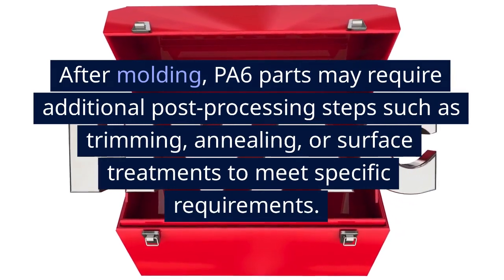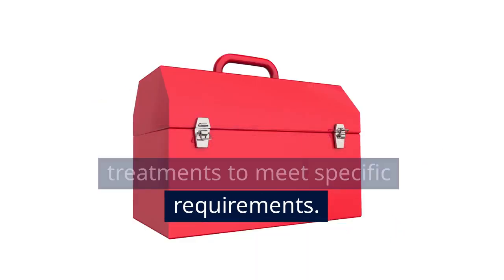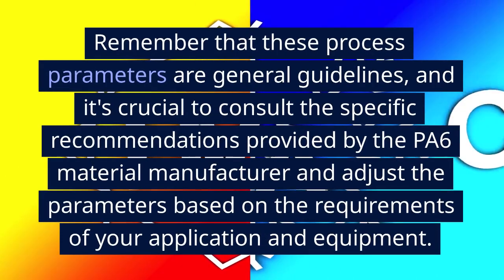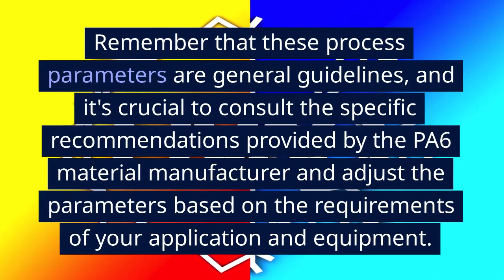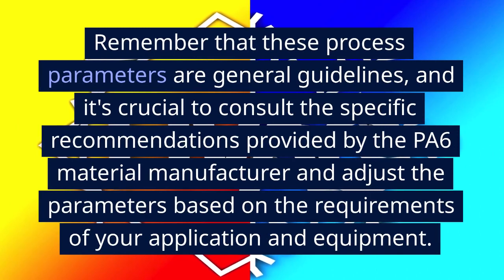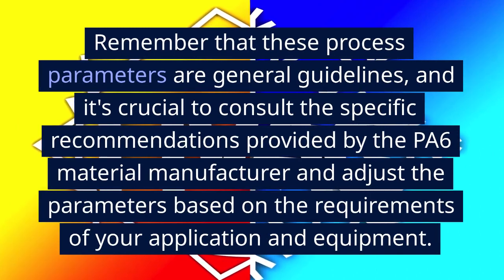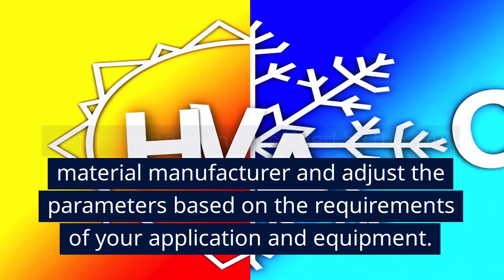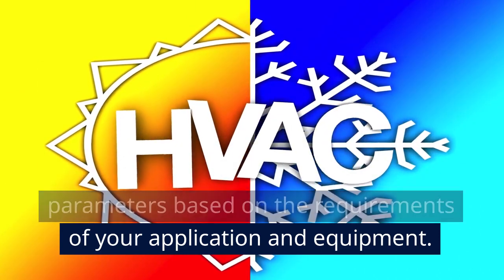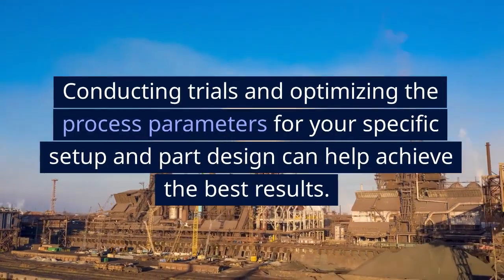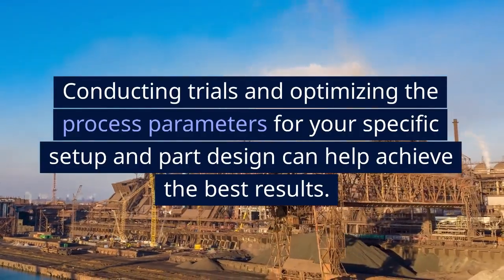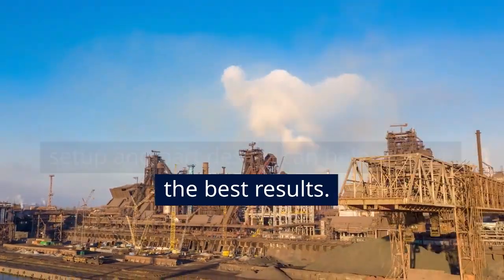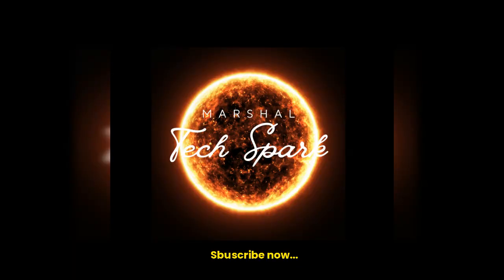Post-processing: After molding, PA6 parts may require additional post-processing steps such as trimming, annealing, or surface treatments to meet specific requirements. Remember that these process parameters are general guidelines — consult the specific recommendations provided by the PA6 material manufacturer and adjust based on your application and equipment. Conducting trials and optimizing the process parameters for your specific setup and part design can help achieve the best results. Thanks for watching.